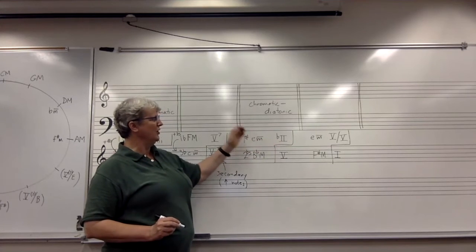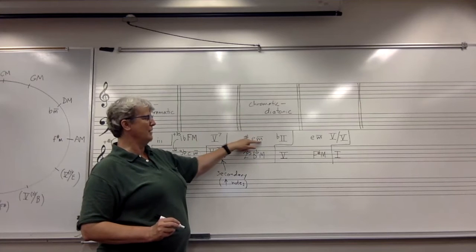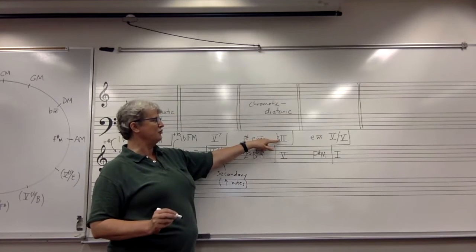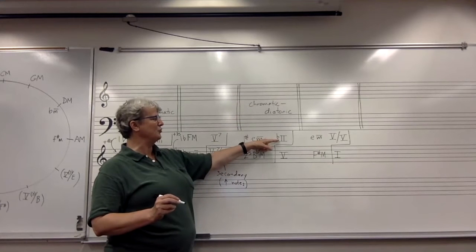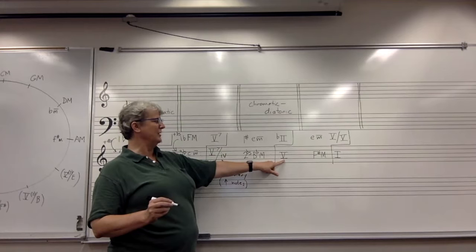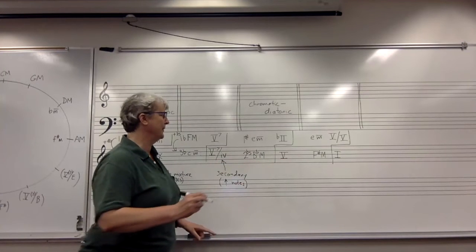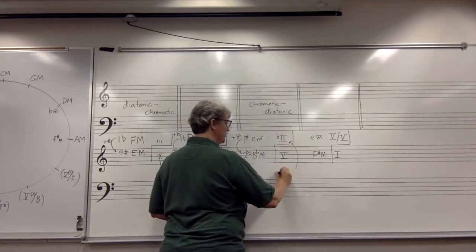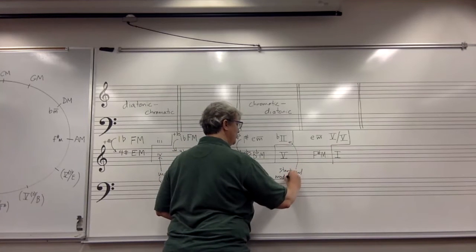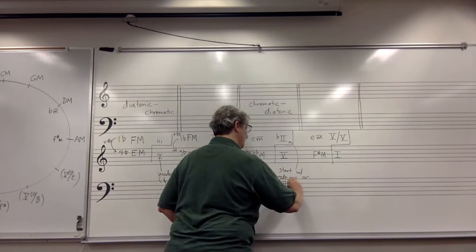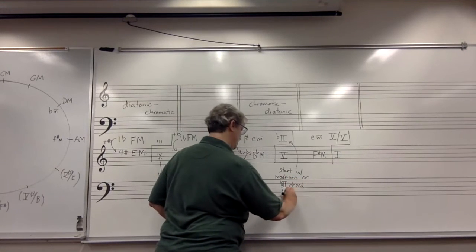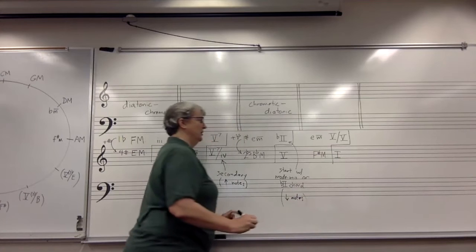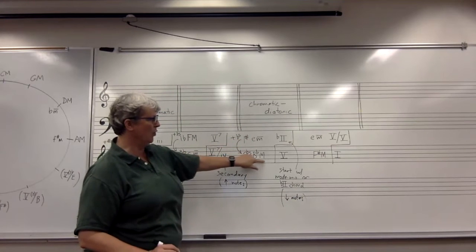A mode mixture chord won't involve lowering a scale degree because we're in minor. But one chord we can consider using is the flat two chord. The flat two chord takes the note F sharp and lowers it to become F natural, and that F major chord does have a role in B flat major — it's the five chord. As we go to a key where we are adding flats, we need to start with a mode mixture or flat two chord, something off to the flat side, so that we can use chromatically lowered notes in the first key that will match up with the notes in this more flat key.